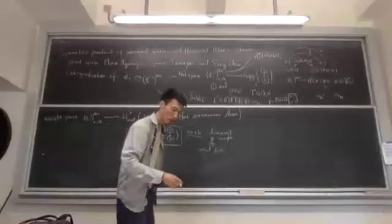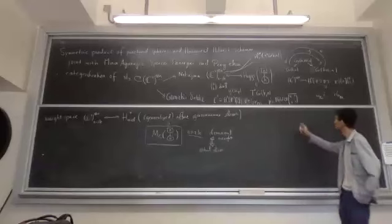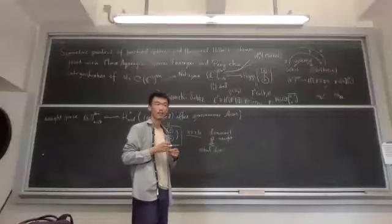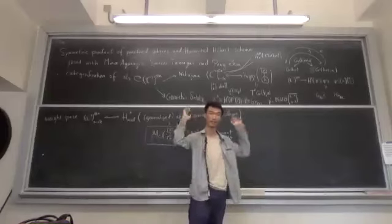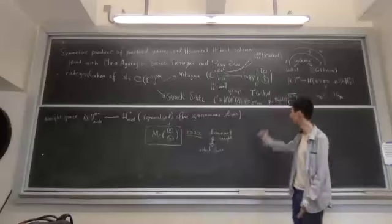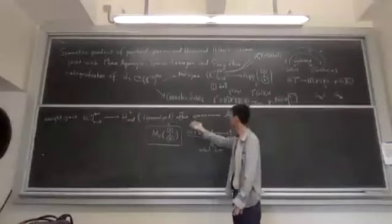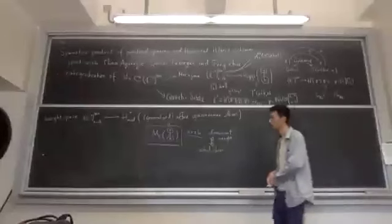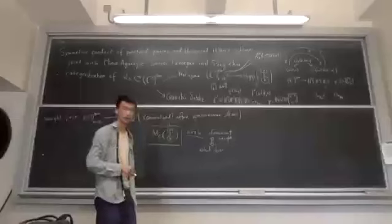Geometric Satake has a corollary that tells you how to go to weight spaces. The way to go there is called hyperbolic localization to each lattice point in the affine Grassmannian. N minus 2k tells you to hyperbolically localize to the particular lattice point corresponding to the weight N minus 2k. You can actually relate the affine Grassmannian slices with that procedure.